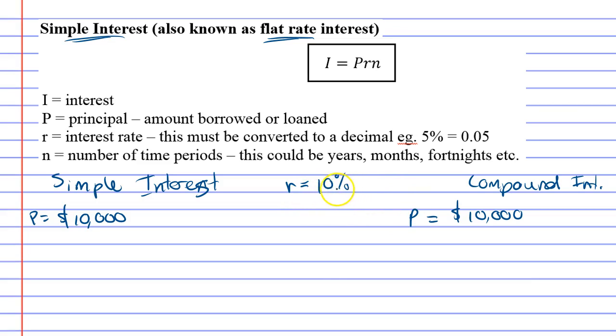When we make our calculations, it's important to convert this into a decimal. Now 10 percent represents 0.1 as a decimal, and the calculation involved just means to divide it by a hundred and that will convert your percentage to a decimal. Very important you do this.